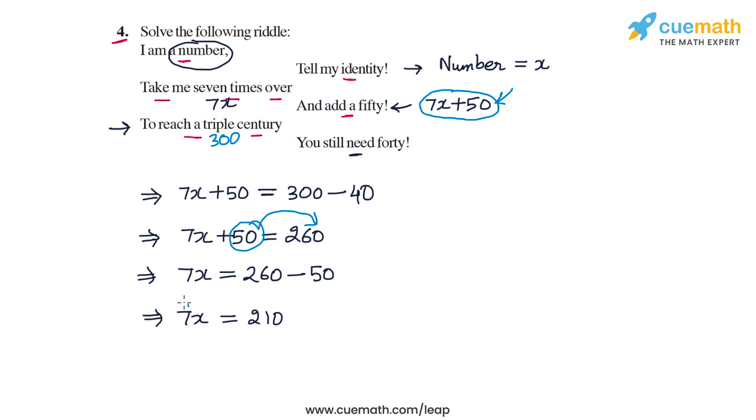Now, we need to get rid of this 7. So, we can divide both sides of this equation by 7. I'm going to write it here. So, 7x by 7 is x. And on the right side, we have 210 by 7. Now, 210 by 7 is 30.